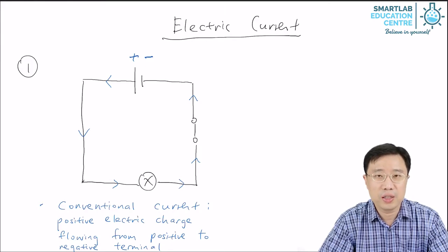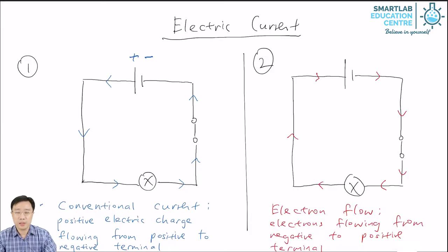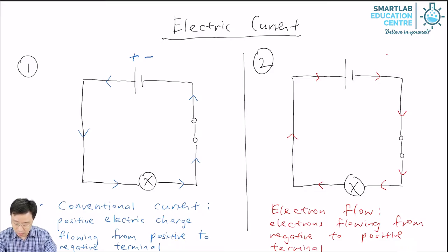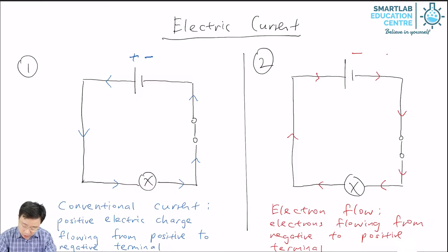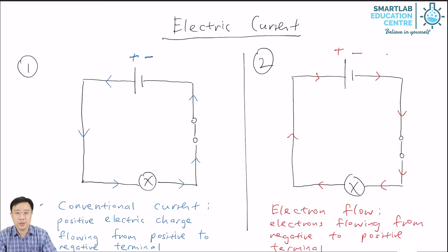A positive charge is something that is opposite in nature to the negative charge the electron carries. The second type of current is called electron flow, as seen in this diagram here. Electron flow is from the negative terminal, following the red arrows, to the positive terminal of the electric cell. And as the name suggests, what is flowing is electrons.